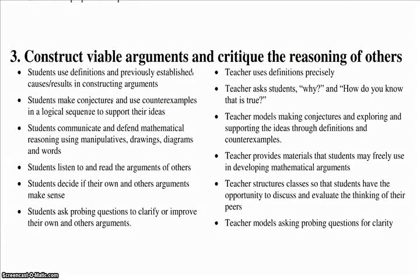Mathematically proficient students are also able to compare the effectiveness of two plausible arguments, distinguish correct logic or reasoning from that which is flawed, and, if there is a flaw in the argument, explain what it is. Elementary students can construct arguments using concrete references, such as objects, drawings, diagrams, and actions. Such arguments can make sense and be correct, even though they're not generalized or made formal until later grades. Later, students learn to demonstrate domains to which an argument applies. Students at all grades can listen and read arguments of others, decide whether they make sense, and ask useful questions to clarify or improve the arguments.